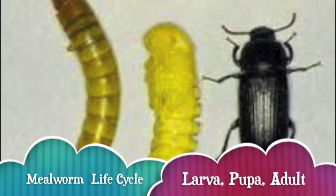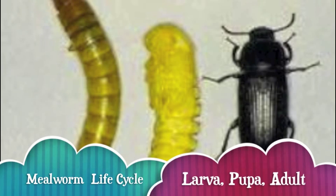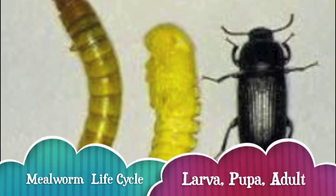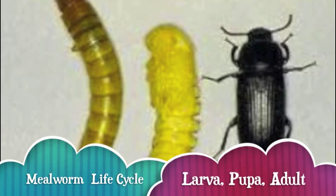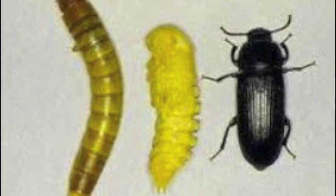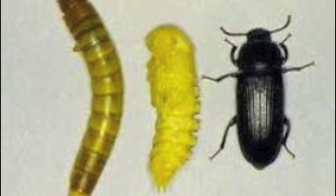Other insects such as the mealworm also go through a life cycle. Here we see the larva, pupa, and fully grown adult beetle.